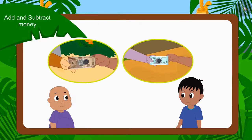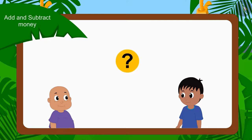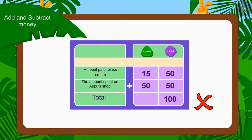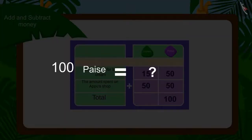First, we will find out the total amount spent by both of them. Can you add these two amounts and tell how much money Raju and Bablu have spent together? First, we will add the numbers written in paise. By adding 50 and 50, we get 100. Can we write 100 paise here? No. So what should we do now? Kids, do you remember how much 100 paise is worth? Right, 1 rupee.